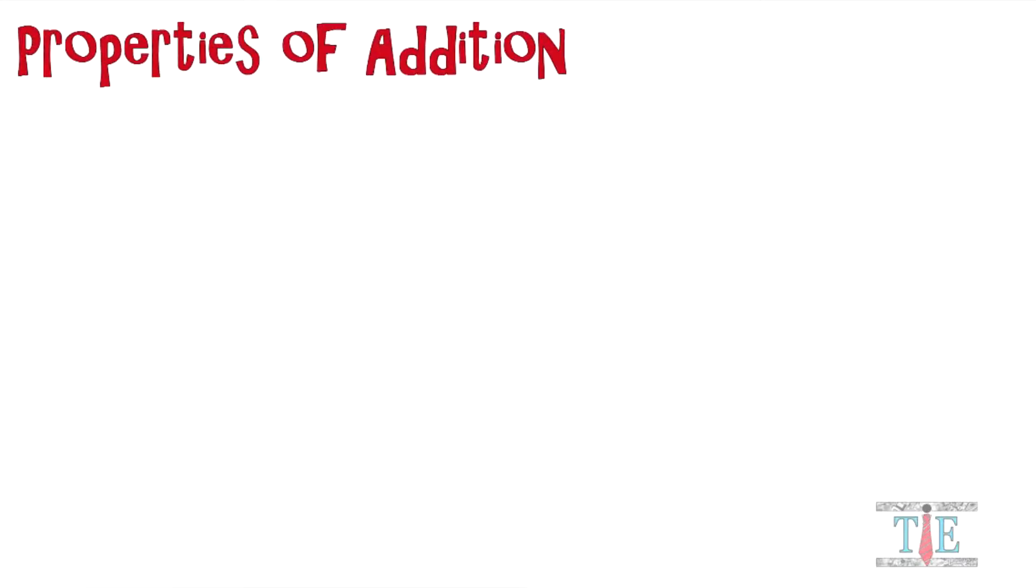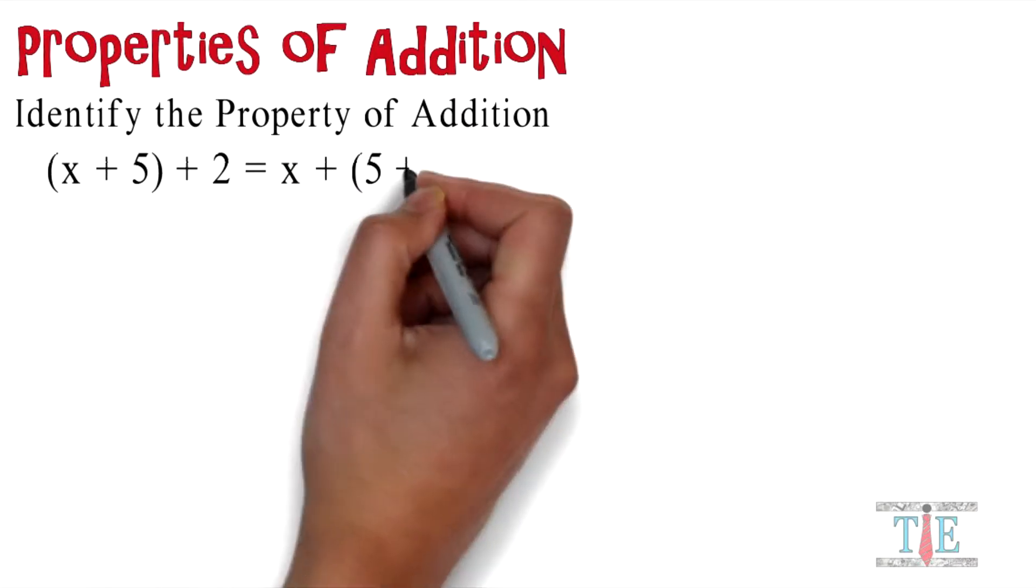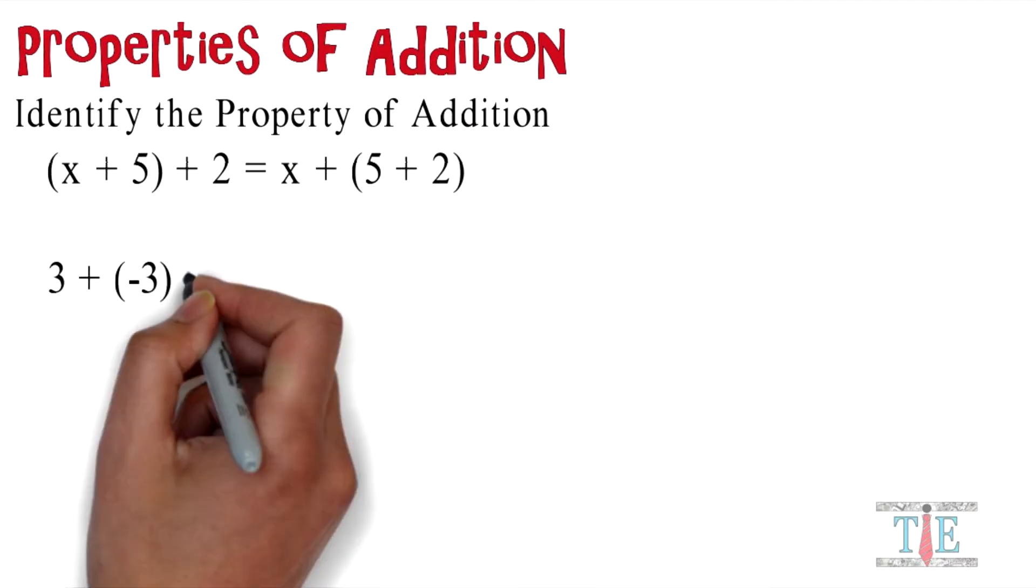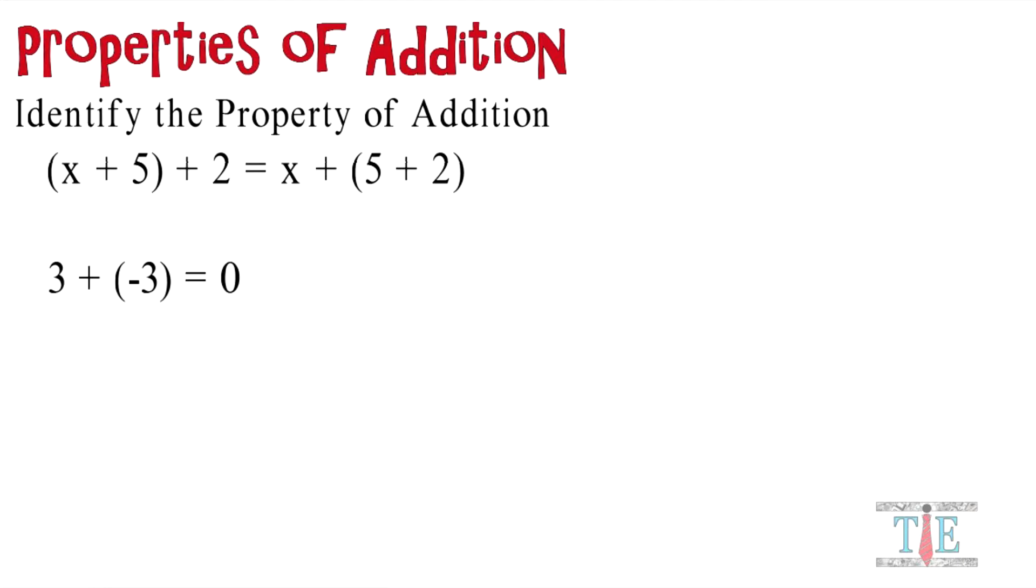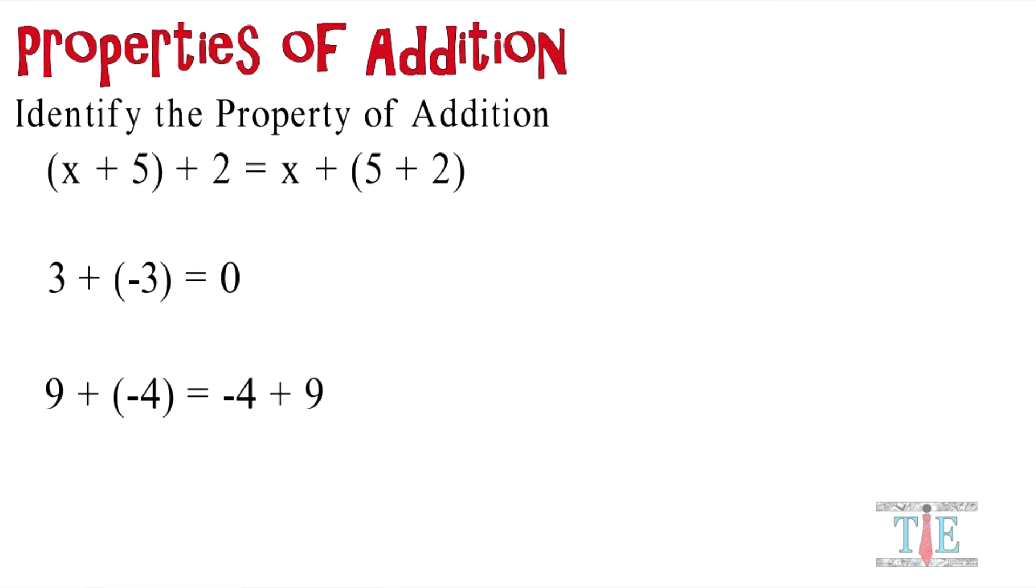Properties of addition: identify the property of addition. (x + 5) + 2 = x + (5 + 2). 3 + (-3) = 0. 9 + (-4) = -4 + 9. 15 + 0 = 15.